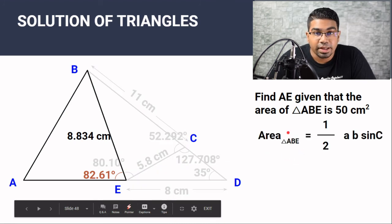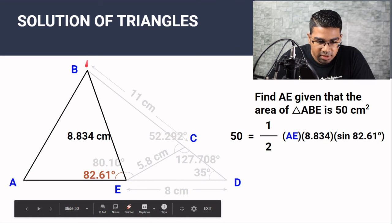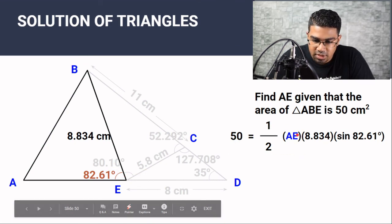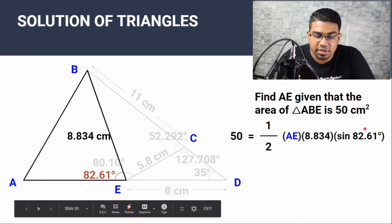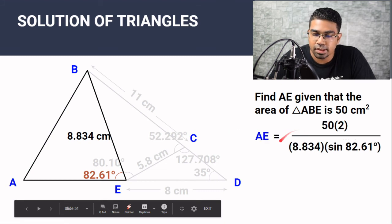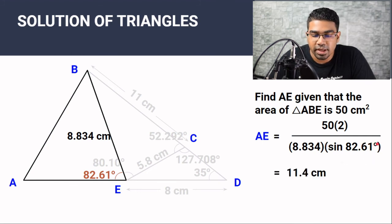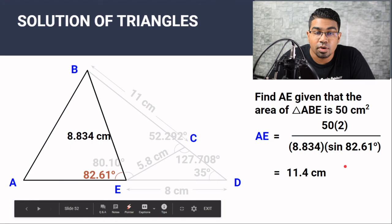Now that we have angle AEB, we can use the area formula. The area of triangle ABE equals ½ × AE × BE × sin(AEB). Substituting: 50 = ½ × AE × 8.834 × sin(82.61). Rearranging to make AE the subject: AE = 50 × 2 divided by 8.834 × sin(82.61). The answer is 11.4 cm.